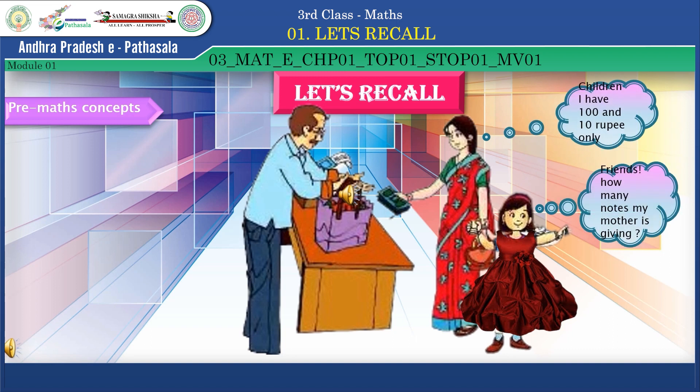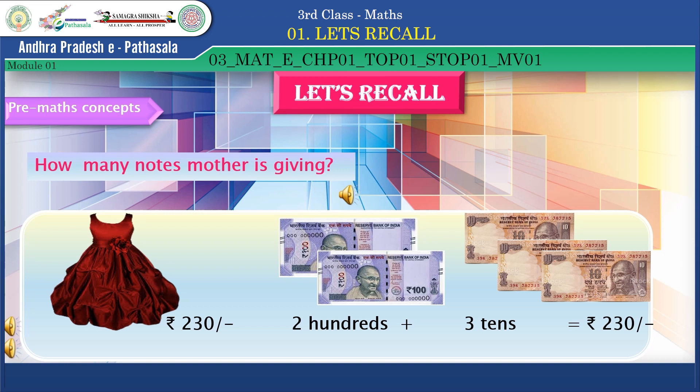Summa has hundreds and ten rupee notes only. How many notes can she pay? Friends, how many notes is she giving? Yes — two hundreds and three tens, total two hundred and thirty rupees.